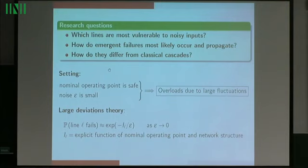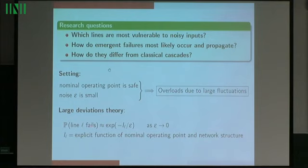We're going to consider a setting when line failures are rare events, and we're going to use this theory to approximate the probabilities of such rare events, and in particular, focus on the exponential decays of such rare event probabilities. It turns out that the key quantity to understand such rare events are the decay rates, which are explicit functions that include a lot of the network components, including the topology and the weather correlation, and they can be computed explicitly.